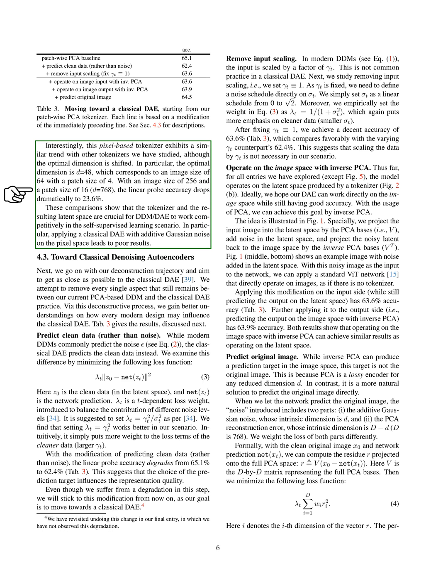Interestingly, this pixel-based tokenizer exhibits a similar trend with other tokenizers we have studied, although the optimal dimension is shifted. In particular, the optimal dimension is 48, which corresponds to an image size of 64 with a patch size of 4. With an image size of 256 and a patch size of 16, 768, the linear probe accuracy drops dramatically to 23.6%. These comparisons show that the tokenizer and the resulting latent space are crucial for DDM DAE to work competitively in the self-supervised learning scenario. In particular, applying a classical DAE with additive Gaussian noise on the pixel space leads to poor results.